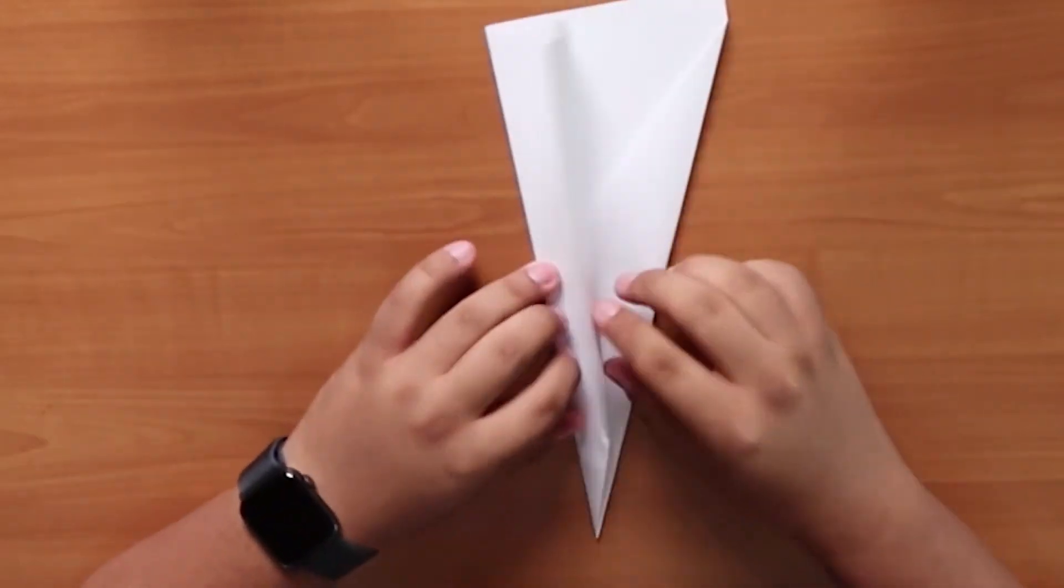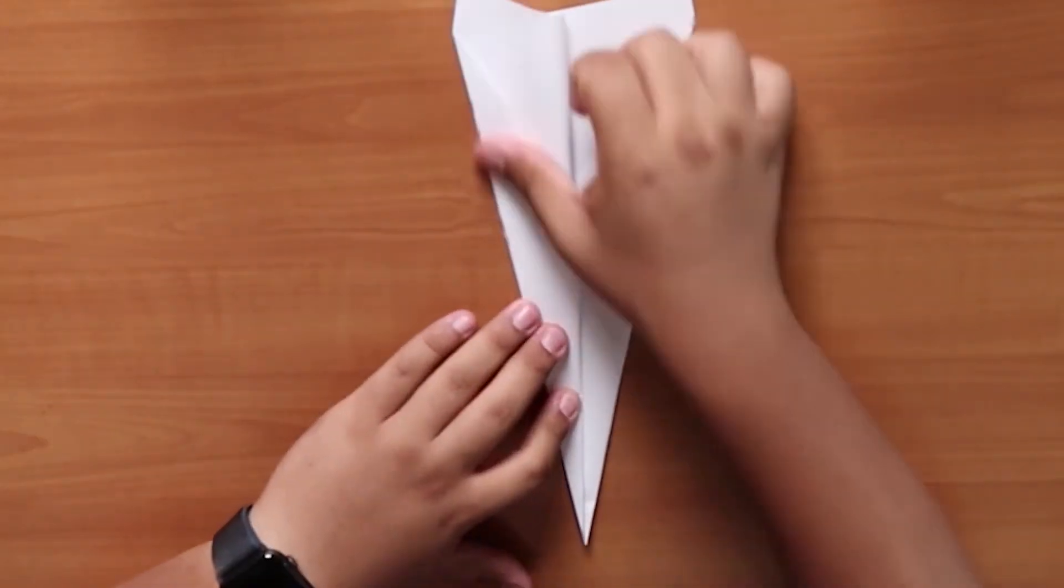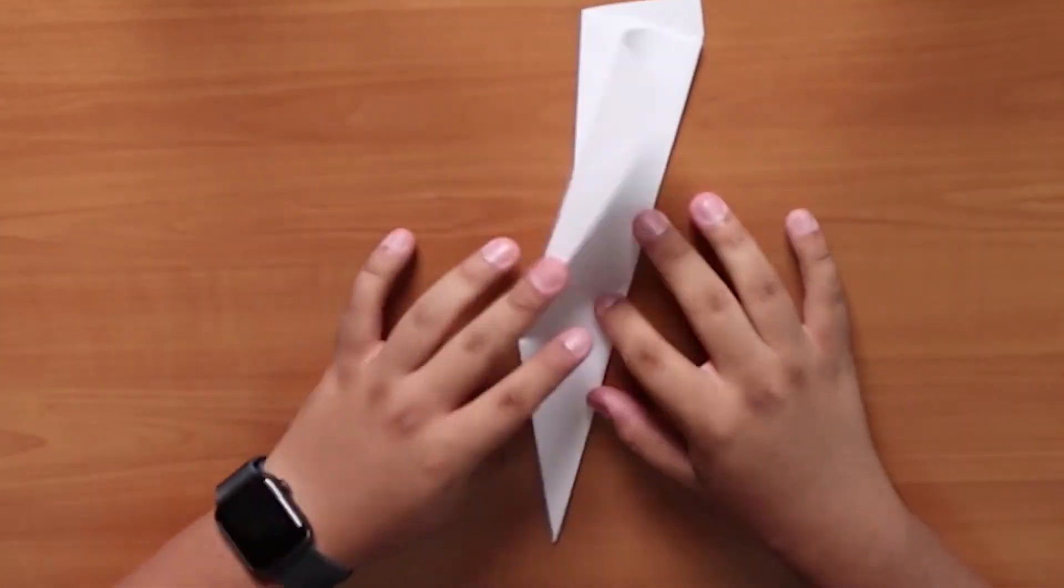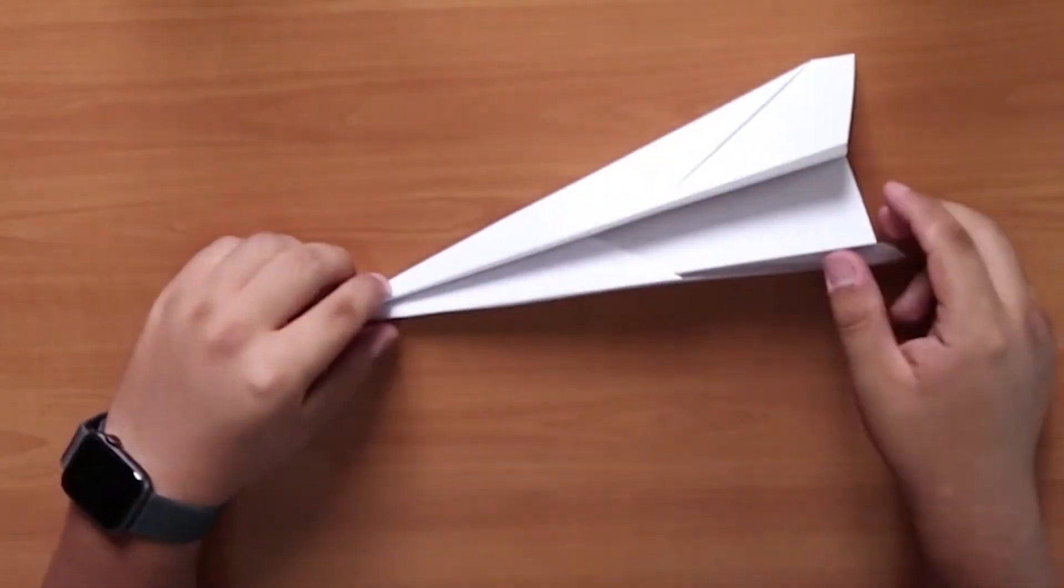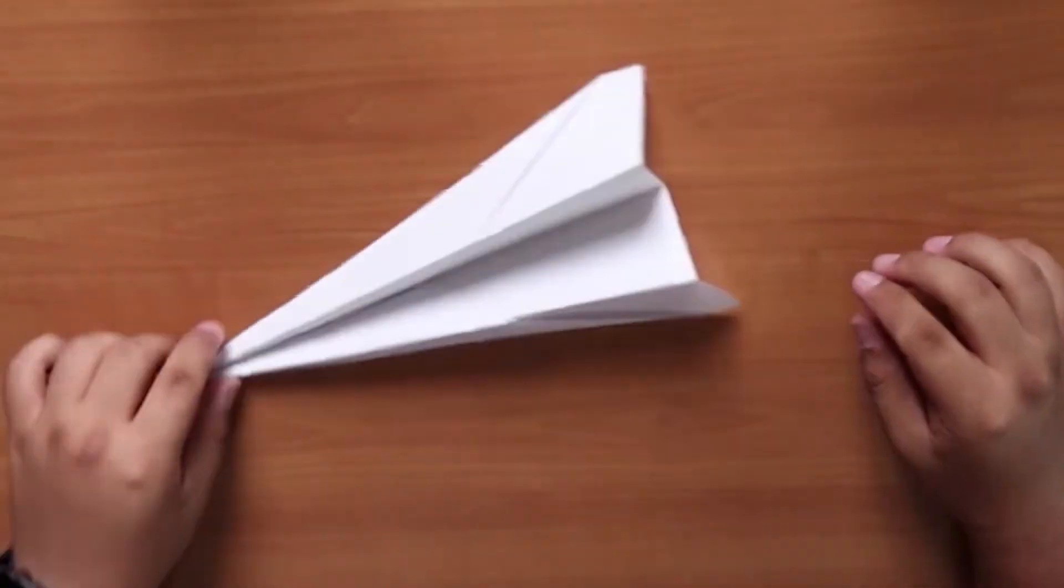Fold the paper in half with the folds facing inside. Then, fold one half outwards towards the middle crease. Fold the other half outwards towards the middle crease. Our paper airplane is now complete, so let's put it aside for now.